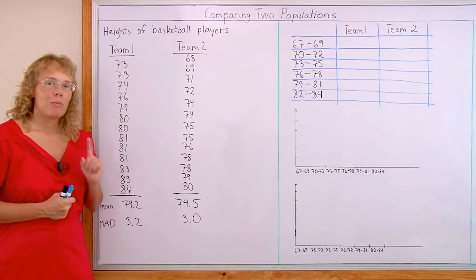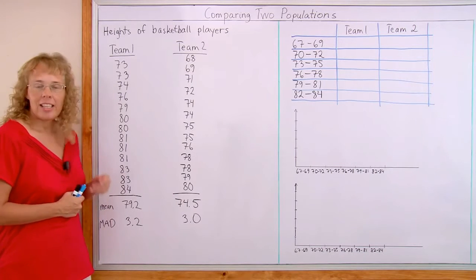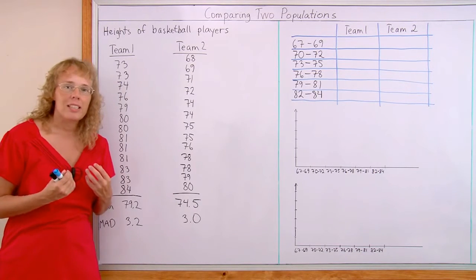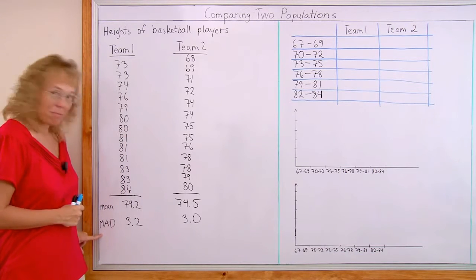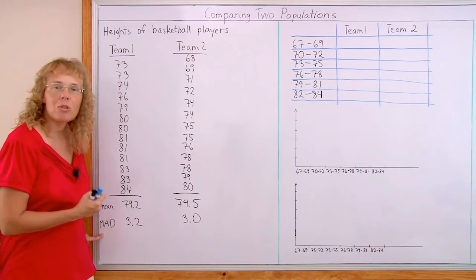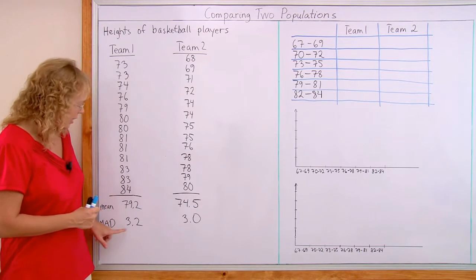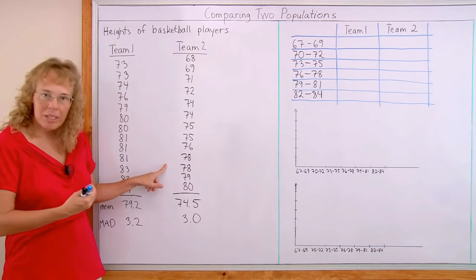Basically, one measure of central tendency, which is here the mean or the average. And then a measure of variability, how much has the data spread out. And that's this MAD comes from mean absolute deviation. It tells us how much, on average, these values differ from the mean.